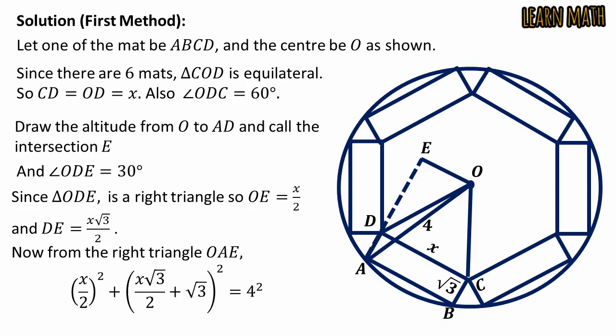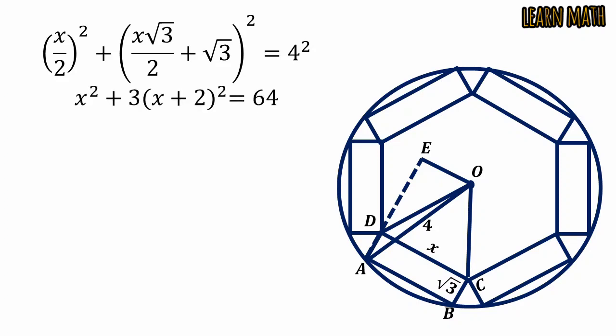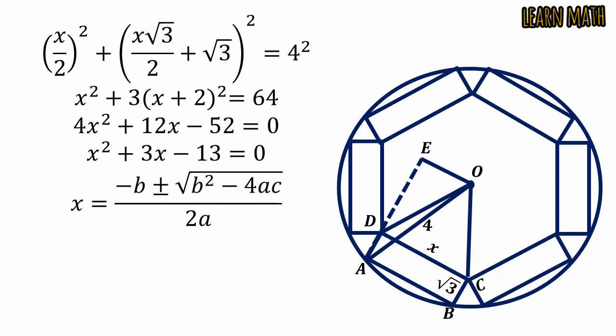The 4 is the radius of the circle. Simplifying this, we get x squared plus 3 times x plus 2 squared equals 64. Simplifying further gives 4x squared plus 12x minus 52 equals 0. Dividing both sides by 4, we get x squared plus 3x minus 13 equals 0. This is a quadratic equation and we can solve this by quadratic formula. Putting the values in this formula, we get the required length of the rectangular placemat.